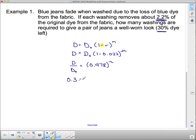And of course 1 minus 0.022 is 0.978 to the exponent n, and what we're going to have over here is 30%, 0.3 equals 0.978 to the n. Now we just have to figure out what n is.